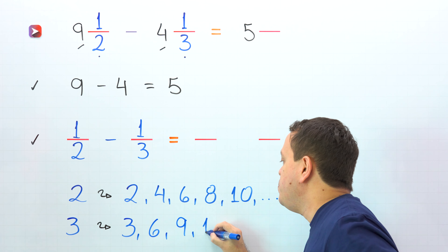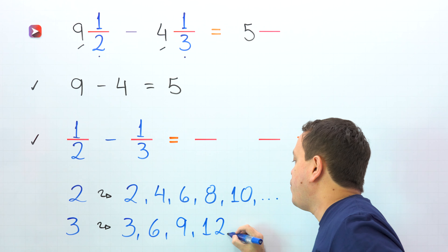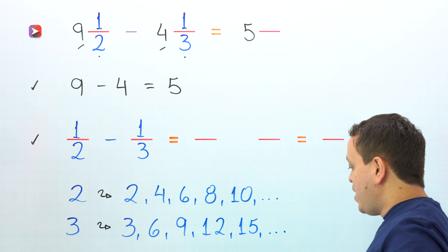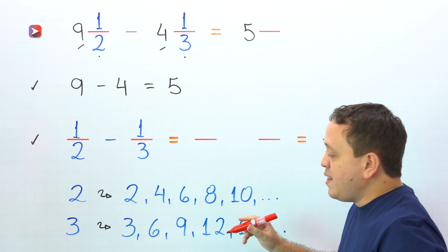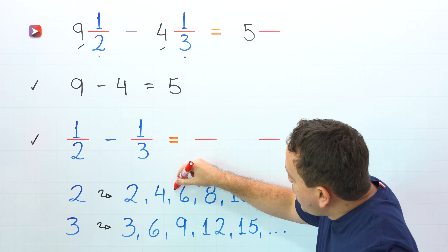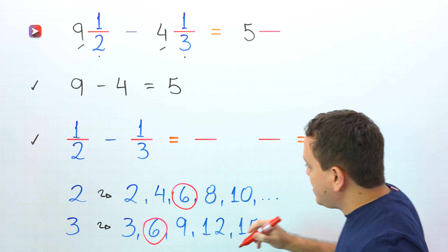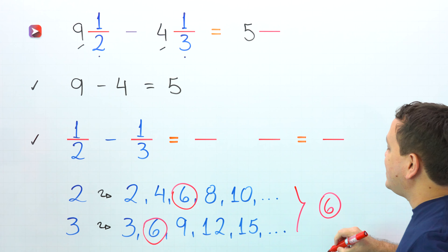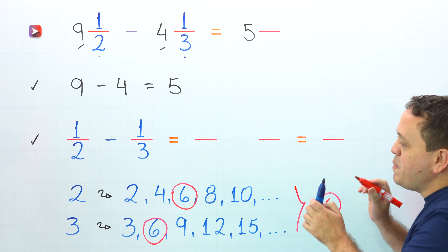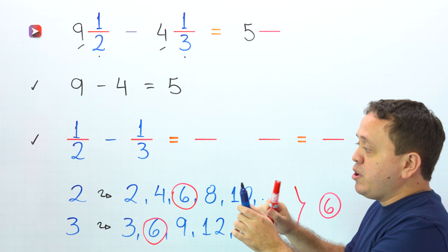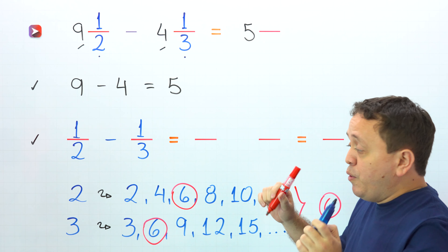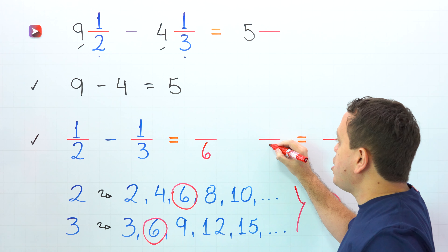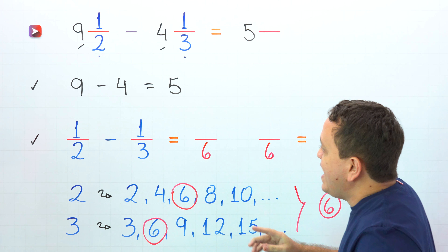The first multiples of 3 are 3, 6, 9, 12, 15, and so on. As you can see, the smallest number that we can find on both lists is 6. Then 6 is the winner — 6 is the least common denominator. Pay attention, because now for each fraction we're going to find an equivalent fraction with a denominator of 6.